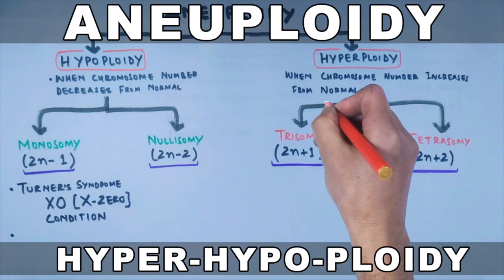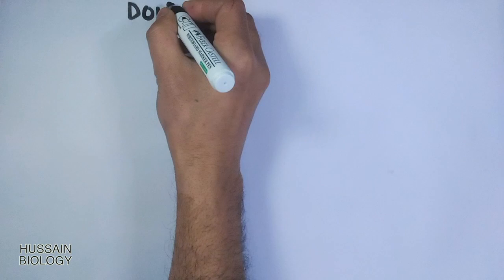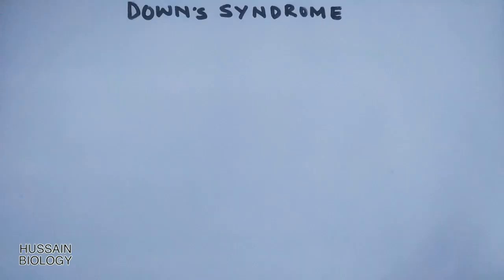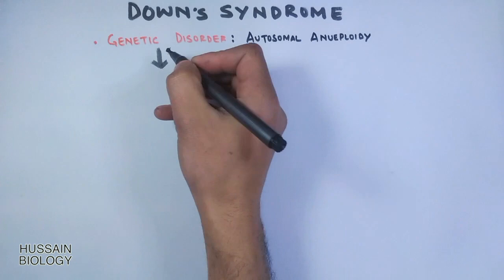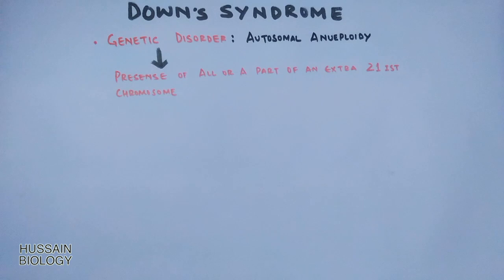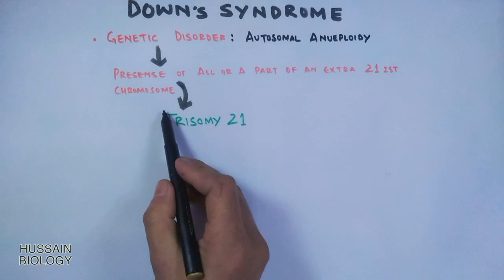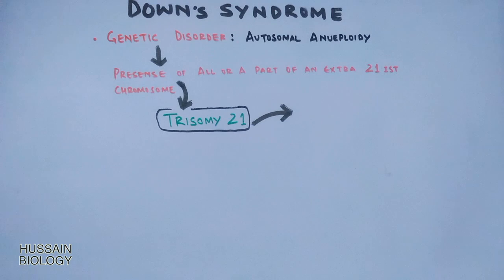In the previous video we discussed about aneuploidy and different types of aneuploidy conditions in humans. In this video we'll be discussing about Down syndrome in detail. Down syndrome is a genetic disorder that is a type of aneuploidy, particularly autosomal aneuploidy. This genetic disorder occurs due to the presence of all or a part of an extra 21st chromosome, so we call it trisomy 21, because in this condition three copies of the 21st chromosome occur within the cell instead of two.